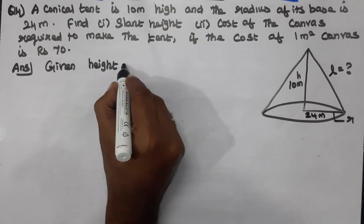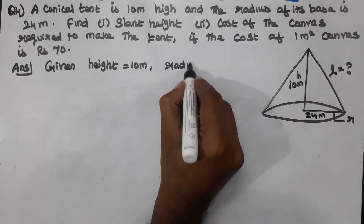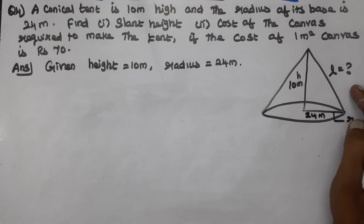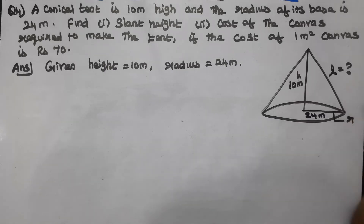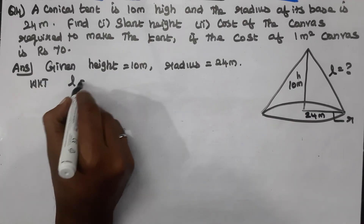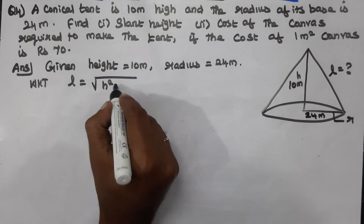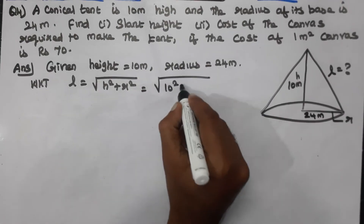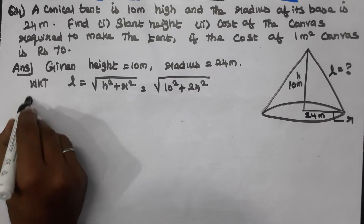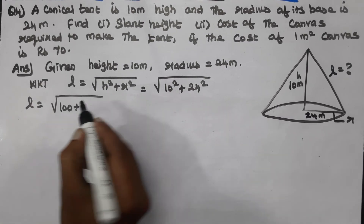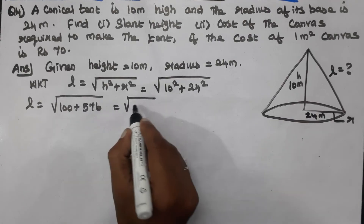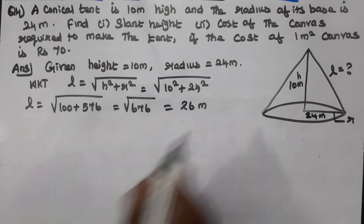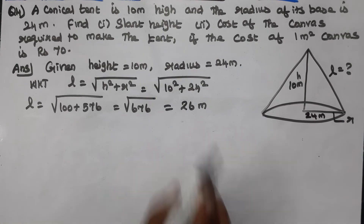Given: height equals 10 m, radius equals 24 m. I'm going to find L — the slant height. We know that L equals square root of h² plus r². L equals square root of 10² plus 24², which is square root of 100 plus 576.